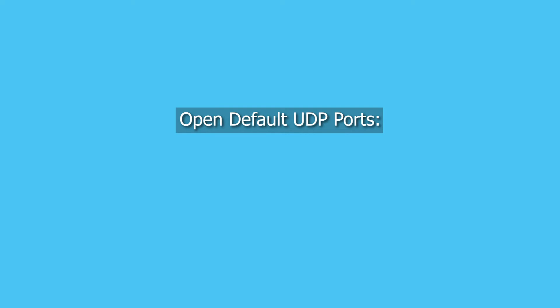If I configure a primary and three redundant streams using the default ports, I must open UDP ports 9000, 9001, 9002, and 9003 in my studio firewall to ensure each stream connects.